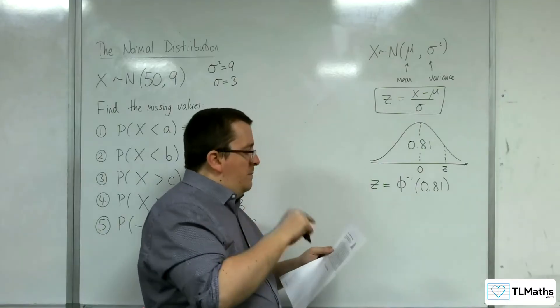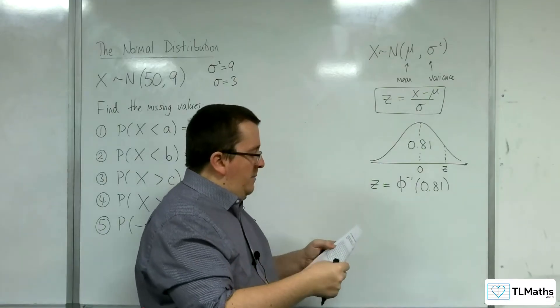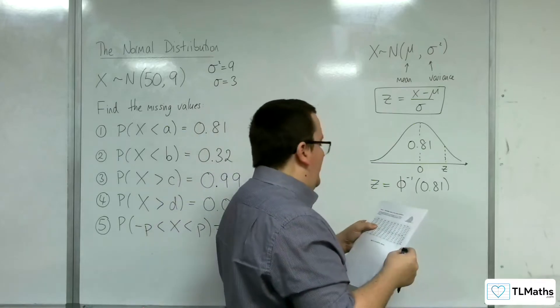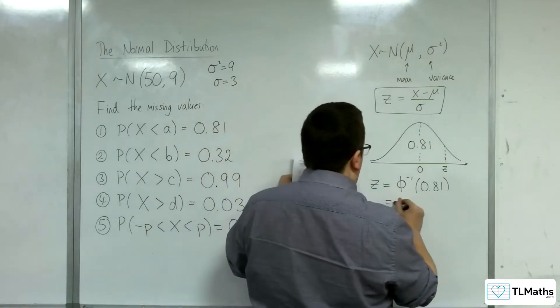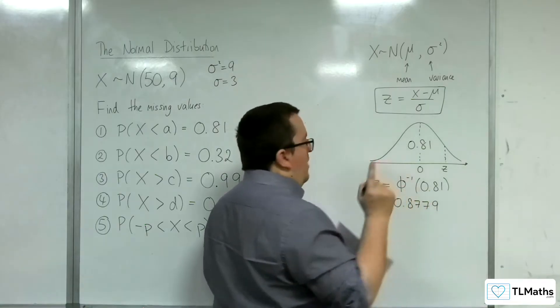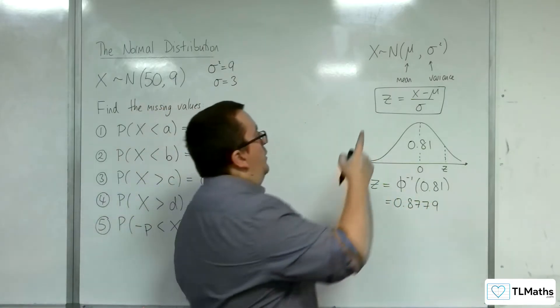So you're looking up 0.81 in your tables. So this is table 2. So 0.81 is 0.8779.